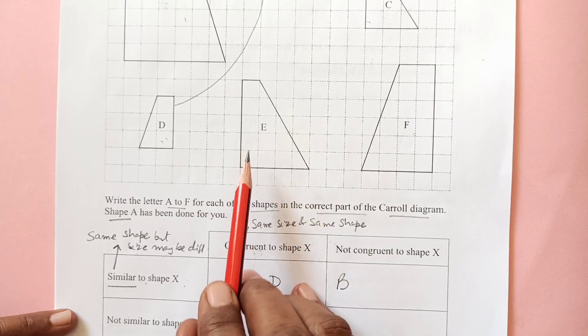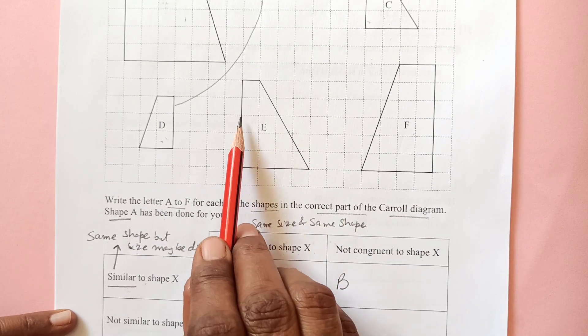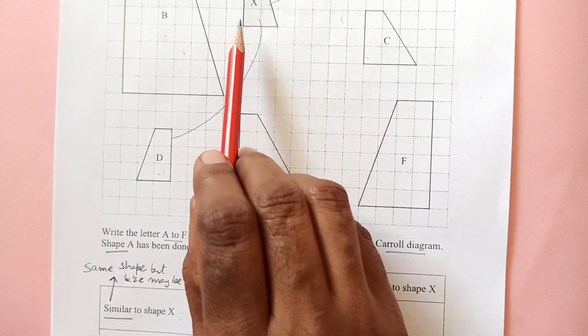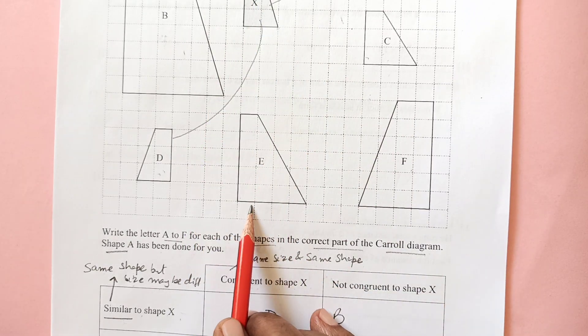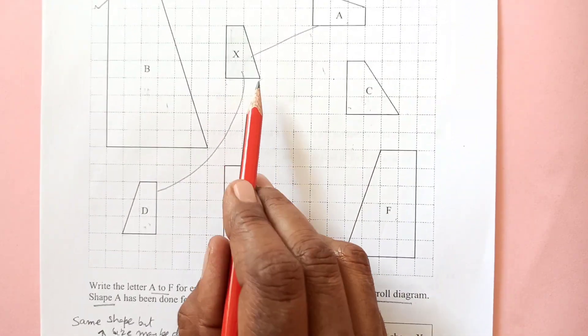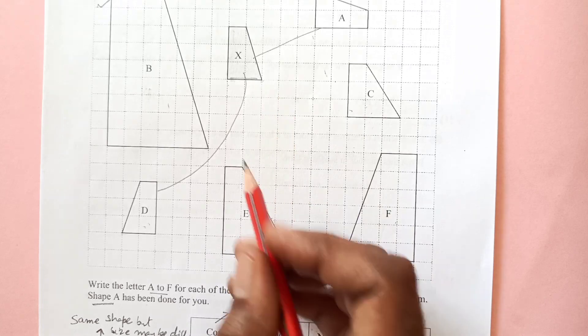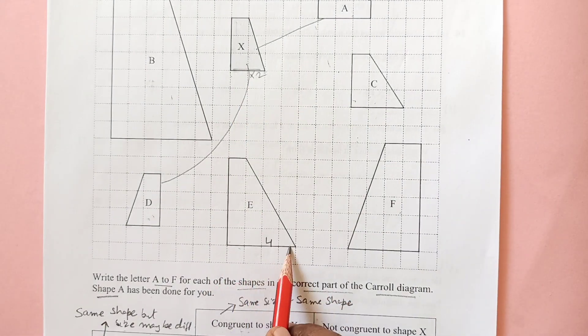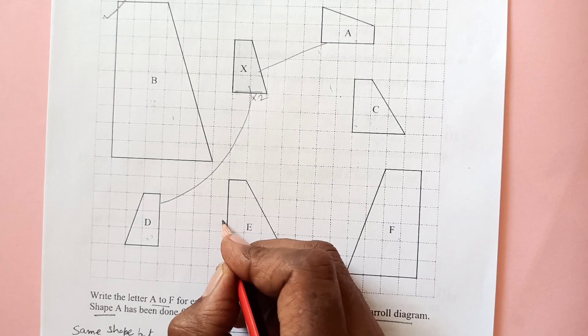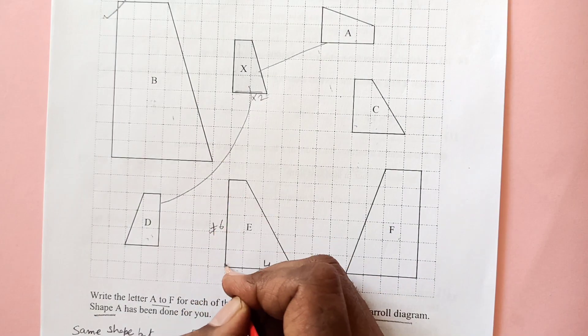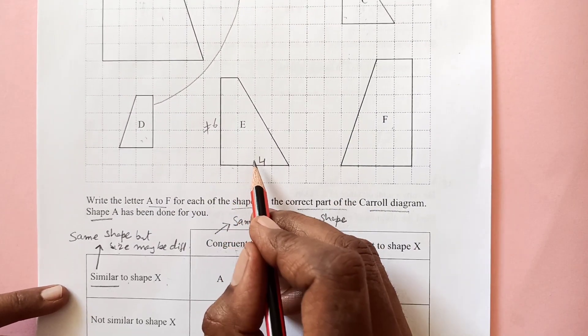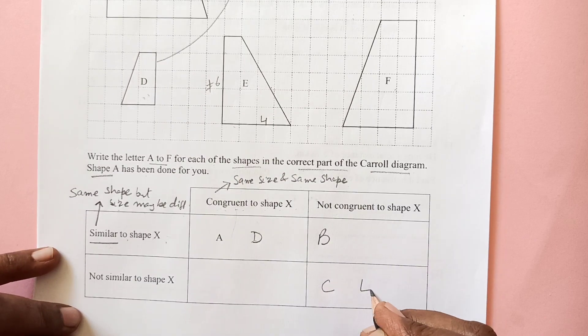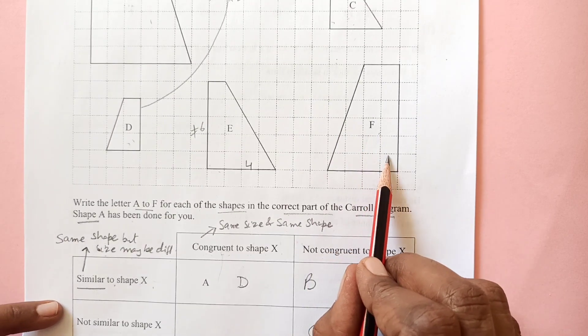Then we have E and F. E, you see it is different - 1, 2, 3, 4, 5 squares and this is 3 squares, so this is times 2. Here down you see 2 squares times 2, it makes 4. So double of that, but then here is 3 and this is not 6. We have 5 here, so this is not similar. It will come over here.